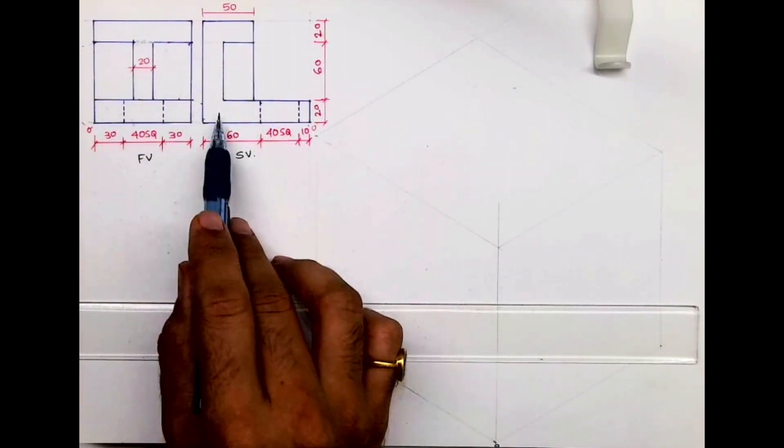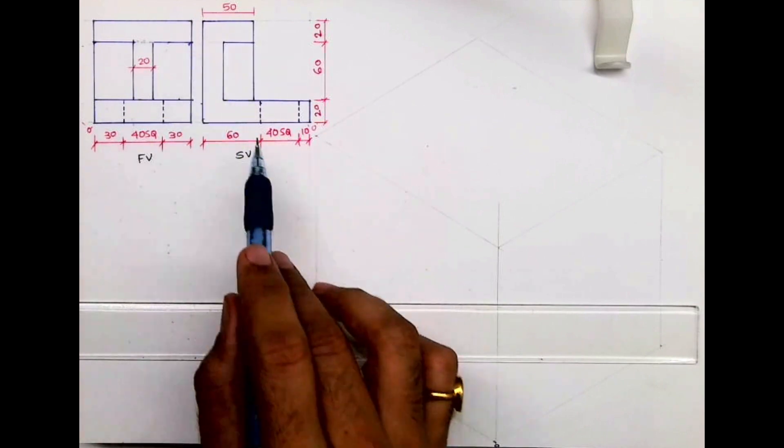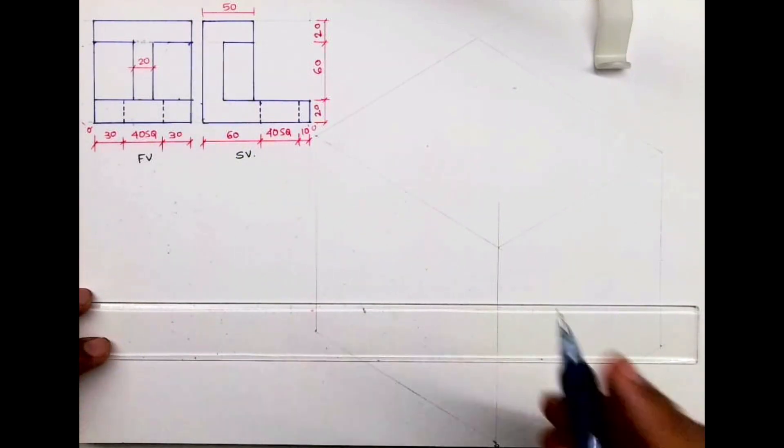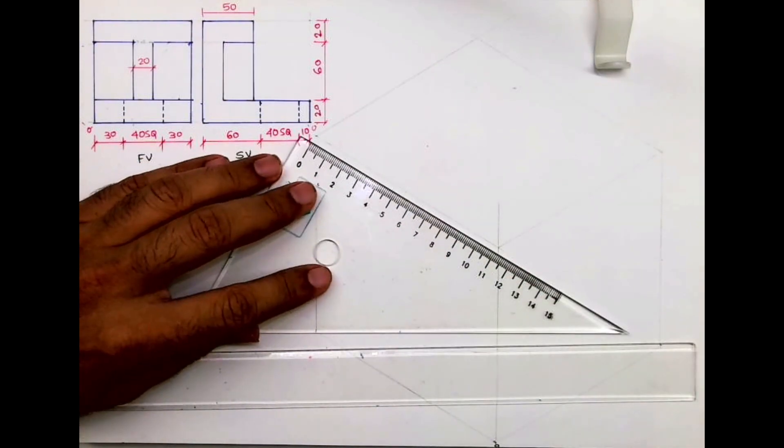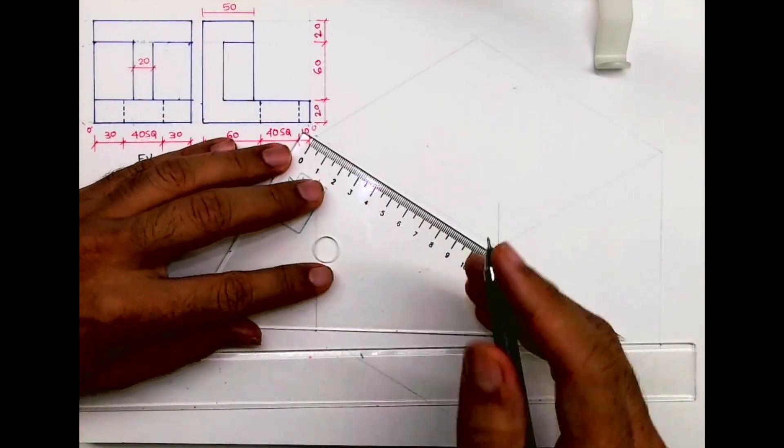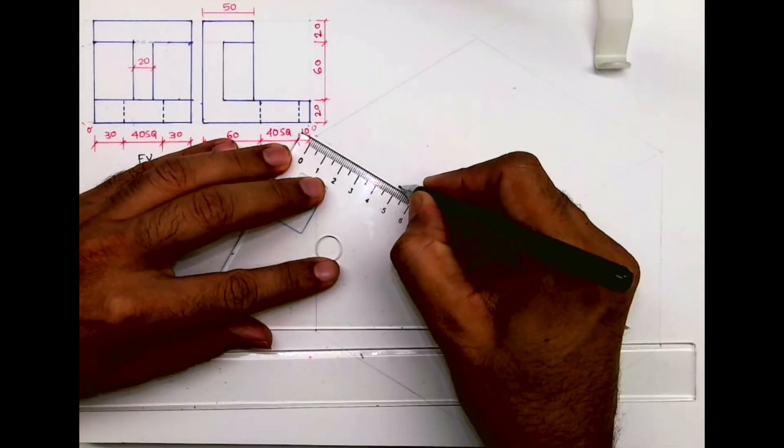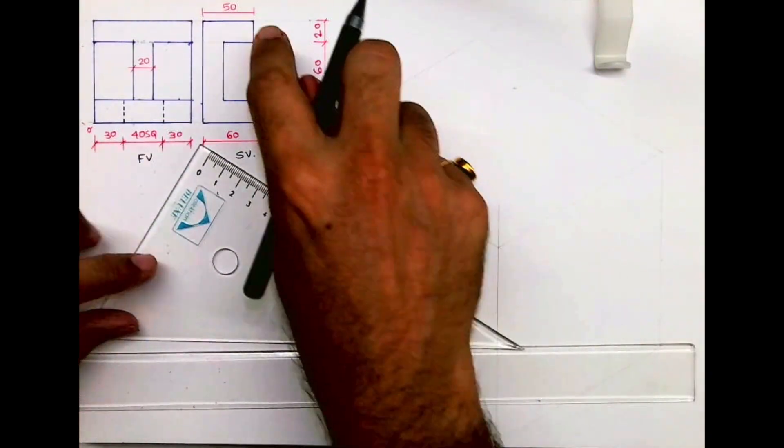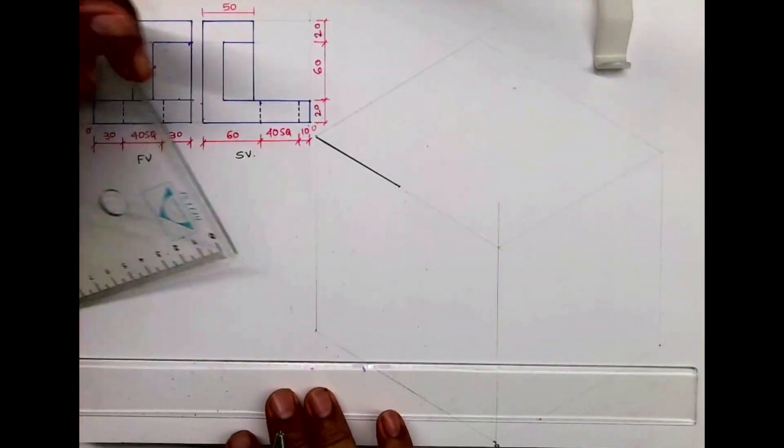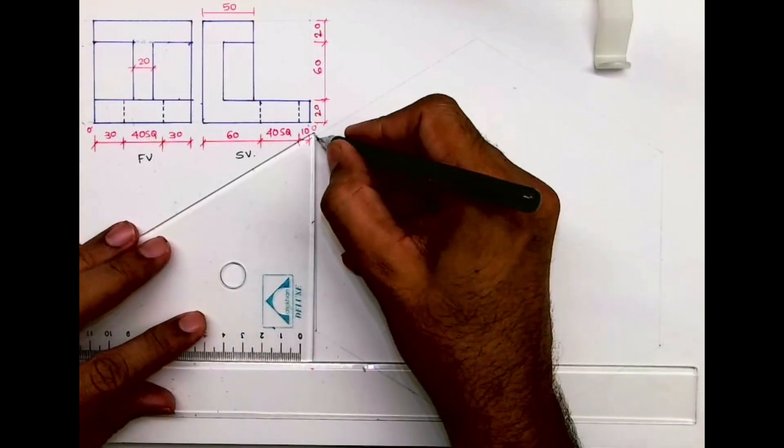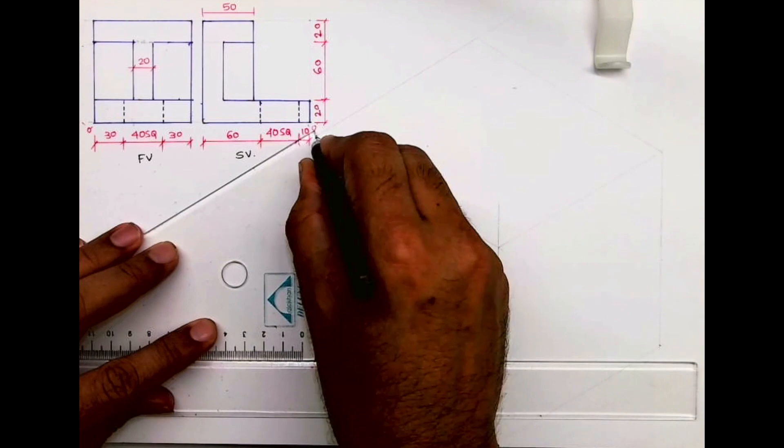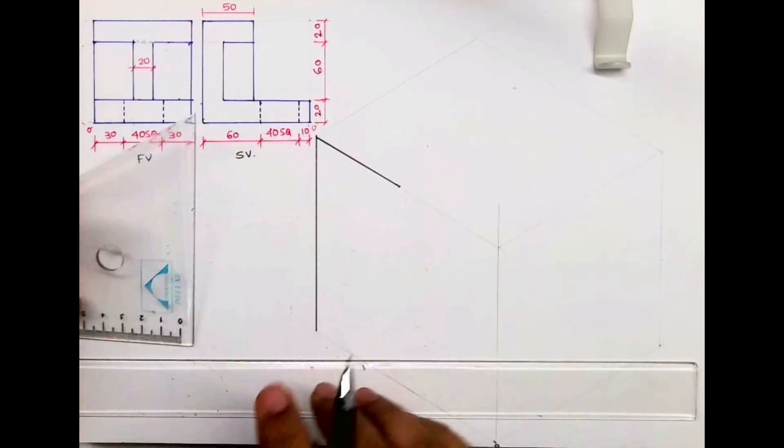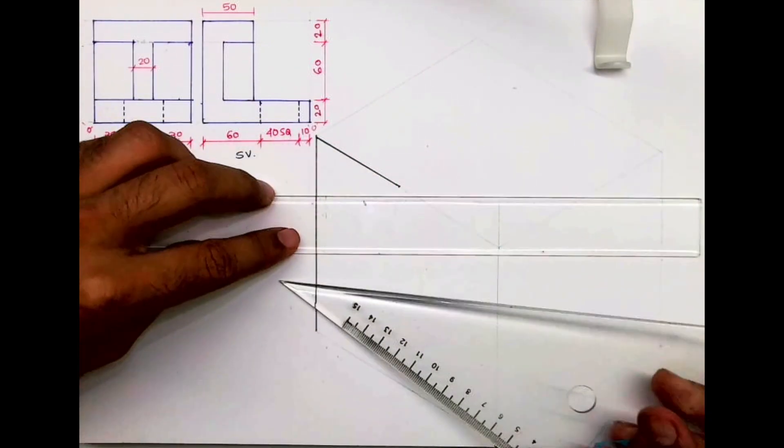So we'll start with side view. I will take 50, then I will go down by 100, then 110.